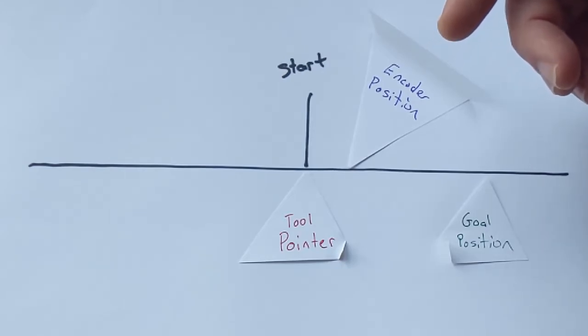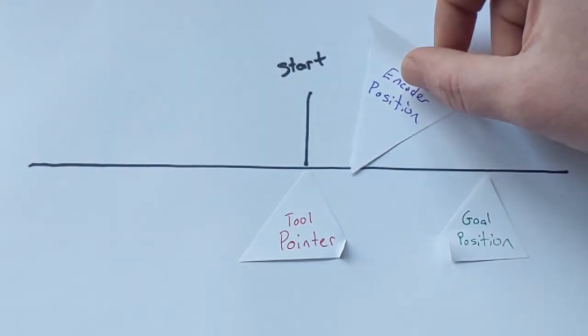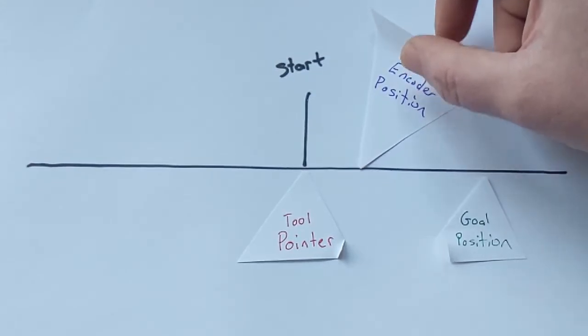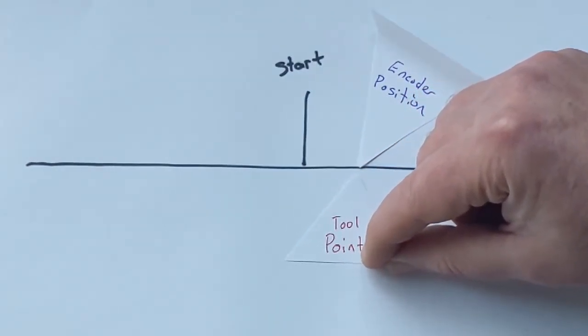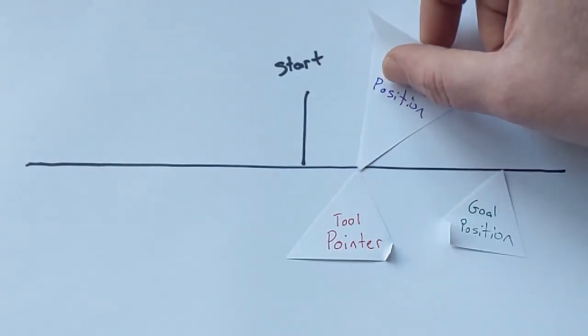So for every 0.75 encoder ticks you're going to go one stepper tick. So once you've reached that, where you're able to do one stepper tick, then you tell the motor to move and then you move the tool pointer over one.